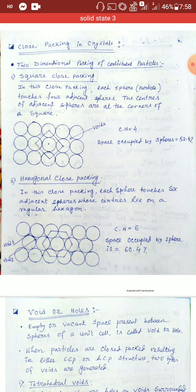Each particle in square close packing is attached to four neighboring particles, so the coordination number in square close packing is four. The coordination number is the number of particles attached to a particular particle. In square close packing, the space occupied by the spheres is 52.4%, meaning the remaining space is vacant.